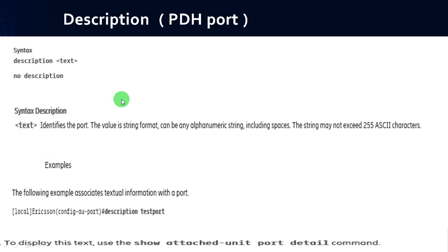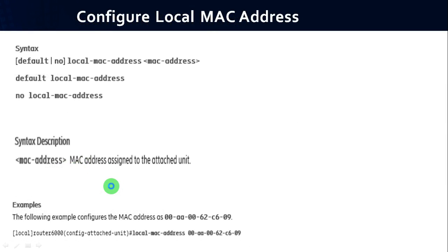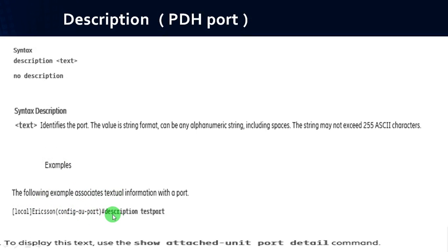If you want to create a description for the PDH port, use the syntax: description <text>. The text is used to identify the port — similar to a label. The value is in string format, can be any alphanumeric string including spaces, and may not exceed 255 ASCII characters. Example: description test-port. To get the complete detail of the PDH port, use: show attached-unit <port> detail.